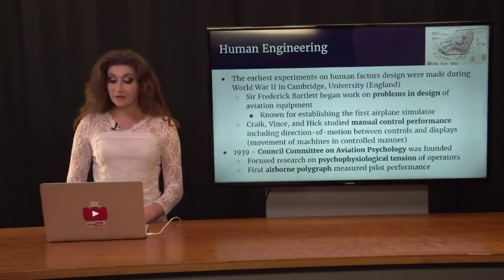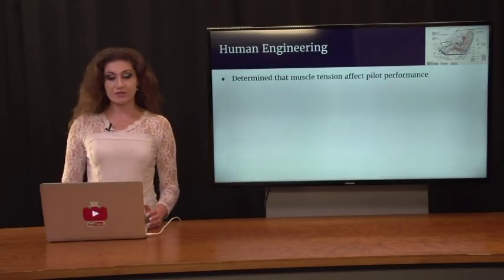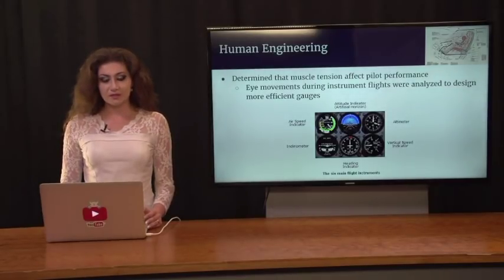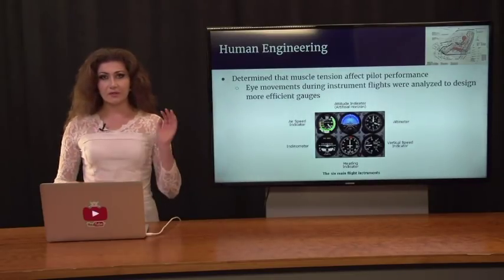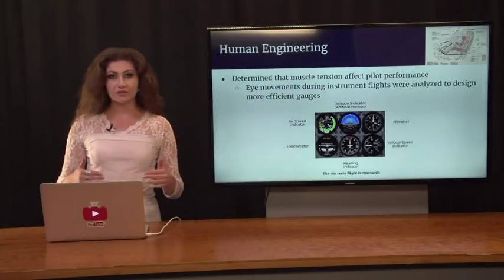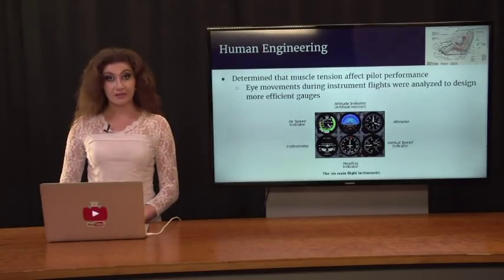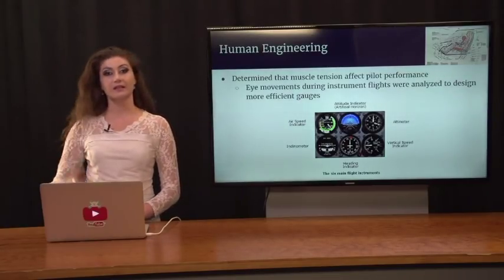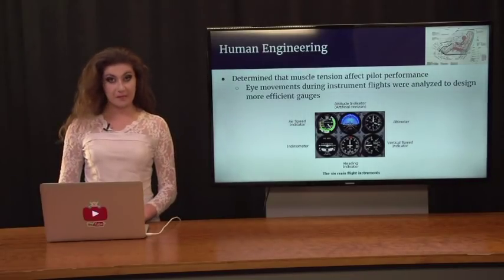The first airborne polygraph measured pilot performance, determining that muscle tension can affect it. Researchers noticed that pilots make very particular eye movements during flights, especially when making approaches or landing. Based on where the pilot's eyes were falling, they created the six-gauge screen that we now see in modern-day airplanes. Next time you're in an airplane, check it out — this is actually the standard way cockpits are designed, with their main six gauges.